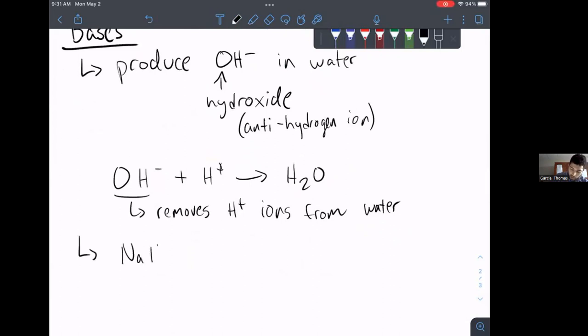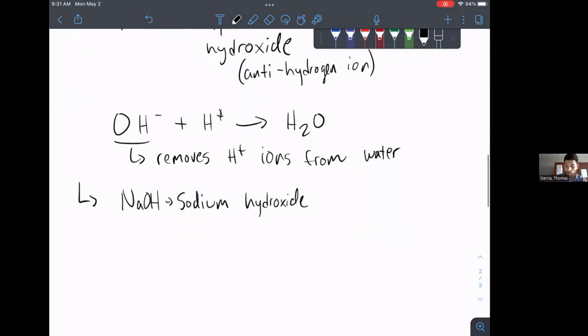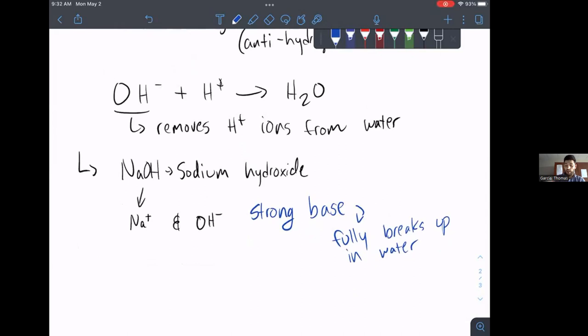So what are some examples of bases? Well, we have, let's say, for example, NaOH or sodium hydroxide. When sodium hydroxide is put in water, it will break up into Na+ and OH-. This is what we would call a strong base because it fully breaks up in water. And, yeah, so it's really good at breaking up in water and, therefore, creating those OH minuses.